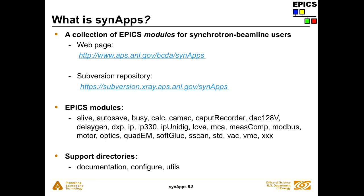There's a web page and a subversion repository for Synapse, so you can get tar files of major releases there. You can export major or minor releases from the subversion repository, and that's probably the best way to get Synapse, because you can get anything you want. Anything that's been tagged, you can get it out of the subversion repository. There is a file in the Synapse support directory that shows you how to do that, so you don't have to know all the subversion stuff.